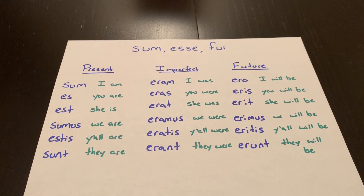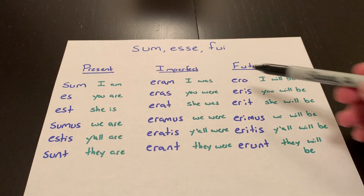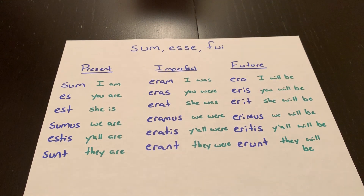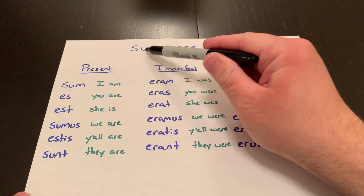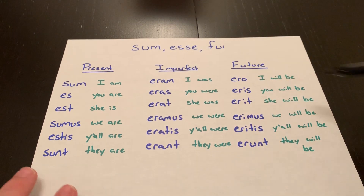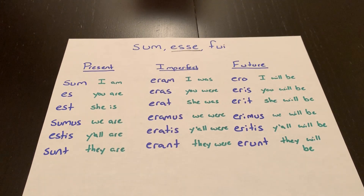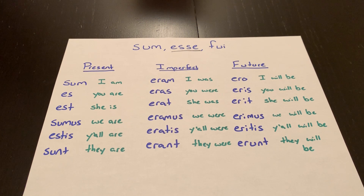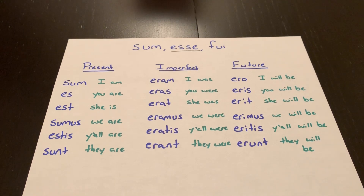In this video, I'm going to go over the irregular verb SUM, the verb 'to be,' and show you how it's formed in each tense and translated. SUM's principal parts are SUM, ESSE, FUI. This does not belong to any conjugation — it's an irregular verb, which means that some of its forms are just going to need to be memorized. There are patterns, but there's not a rule you can follow like for normal verbs. These are the three tenses you just need to memorize.